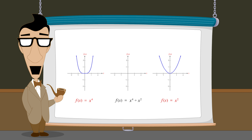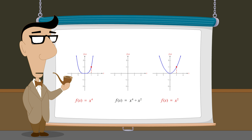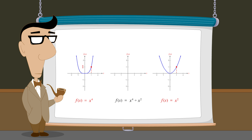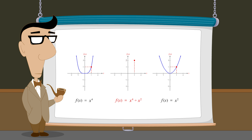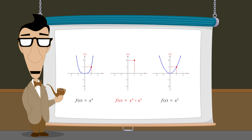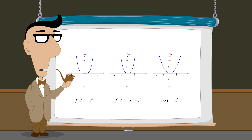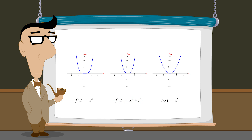For example, when x equals one, both functions have a value of one. Therefore, the value of the function x to the fourth power plus x-squared is one plus one, or two. Doing this for every value of x produces the graph of the polynomial function x to the fourth power plus x-squared. This function doesn't look much different from the graphs of the two functions we added.